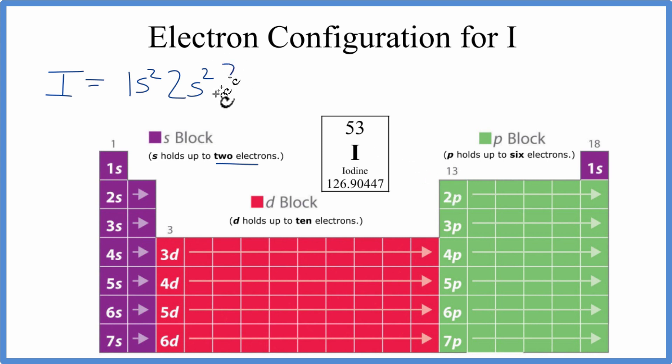2p, and the p orbitals, they can hold up to 6 electrons. So we'll put a 6 there. Now from 2p, 3s2. Then the 3p, 6.